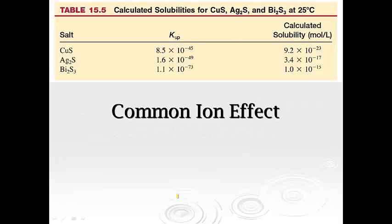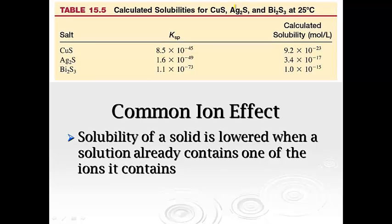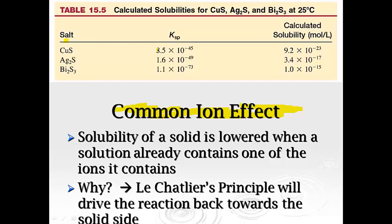So here, for example, again, calculated solubilities for copper 2-sulfide, silver sulfide, and bismuth sulfide. Solubility of a solid is obviously lowered when a solution already contains one of the ions. For example, this is just the common ion effect. In fact, if I am trying to dissolve copper 2-sulfide, and if there's already silver sulfide in there, it's not going to dissolve as much because it's going to force it to go backwards. So it's going to minimize how much solubility that can have. Well, Le Chatelier's principle will drive the reaction back towards the solid side.